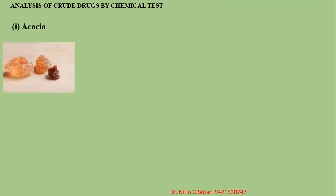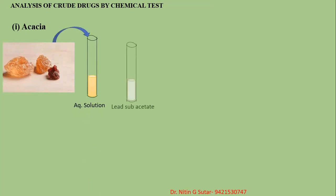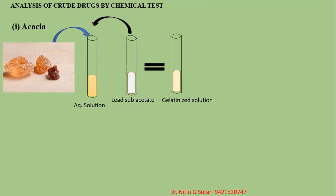For acacia, authenticated acacia gum should be collected, which is authenticated from the botanist, Department of Botany. Then an aqueous solution of this drug is prepared. That aqueous solution needs to be treated by utilizing a lead sub-acetate solution. When the lead sub-acetate solution is added into the aqueous solution of the acacia, we get a gelatinized, somewhat viscous solution with turbidity. That indicates the presence of acacia.